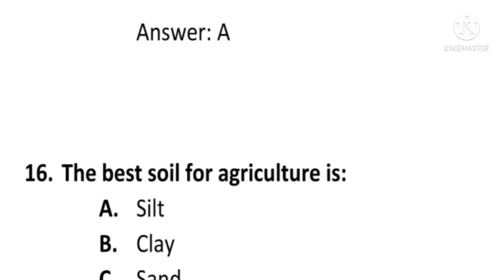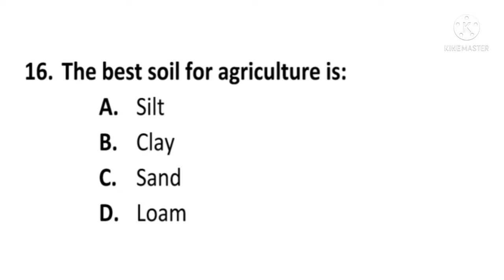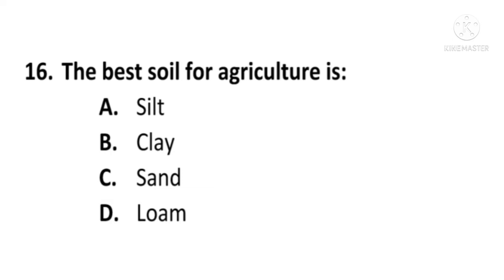Next question: The best soil for agriculture is — A) Silt, B) Clay, C) Sand, or D) Loam. The answer is D, Loam. The best soil for agriculture is loam; D is the correct option.